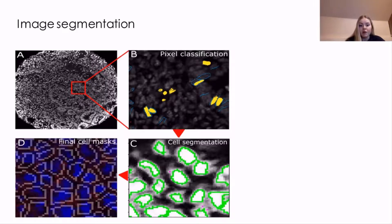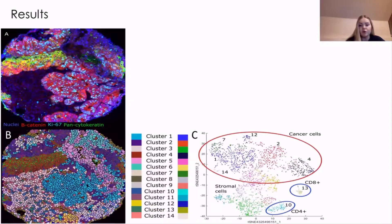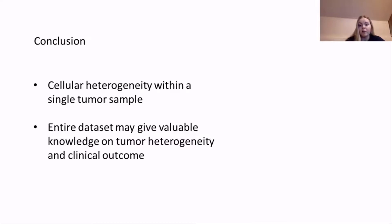Probability maps are then generated, which are used in the next segmentation step to create single cell masks. In this poster, I'm showing a representative analysis of a single tumor sample where we use T-SNE and phenograph to cluster the high-dimensional single cell data. Phenograph clusters are overlaid on the T-SNE map, and also overlaid on the sample image. We see that there are six phenograph clusters that make out six distinct cancer cell populations, showing that in this single sample we have tumor heterogeneity. We have already found distinct cellular heterogeneity within a single sample, and hopefully the entire dataset would tell us even more related to patient outcome.